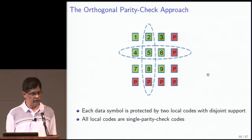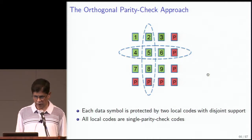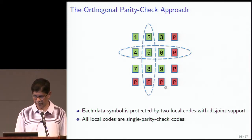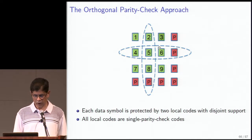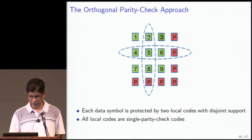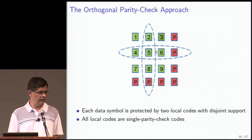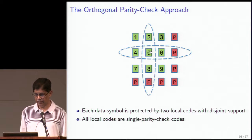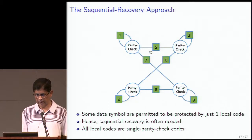If two symbols are erased and you can't use one parity check because it has another erased symbol, you can use the individual row parity because of the orthogonality — there is always some parity that will bail you out. This code is optimal. The sequential recovery approach says that requiring every symbol to be protected by two local codes may not be necessary. In the sequential recovery example, some symbols are protected by just one parity, while others are protected by two local codes.